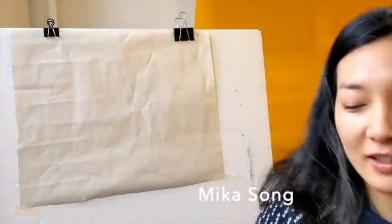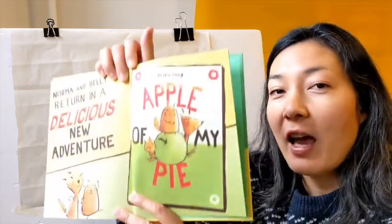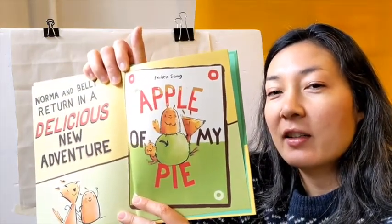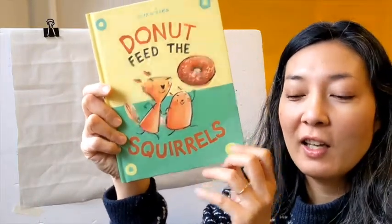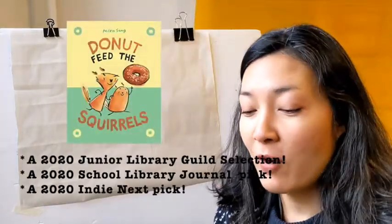Hi, my name is Mika Song and I'm here to tell you about my new graphic novel early reader, Apple of My Pie. It's the follow-up to Donut Feed the Squirrels and it comes out in June from Random House Graphic.